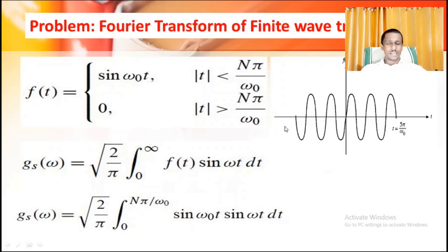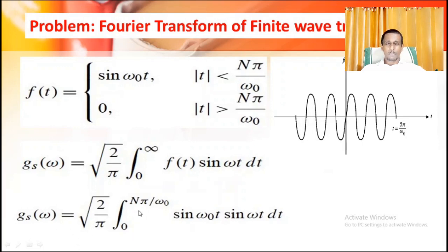We can use a sine transform. Therefore, g_s(ω) = √(2/π) × integral from 0 to infinity of f(t) sin(ωt) dt. Since f(t) = sin(ω₀t) from 0 to nπ/ω₀, we have g_s(ω) = √(2/π) × integral from 0 to nπ/ω₀ of sin(ω₀t) sin(ωt) dt.